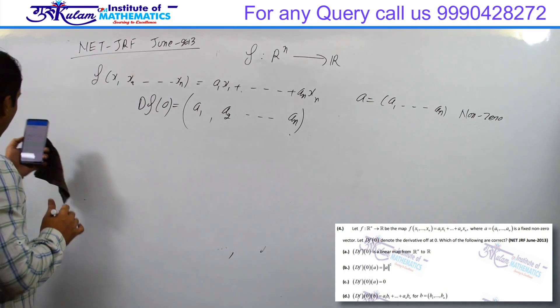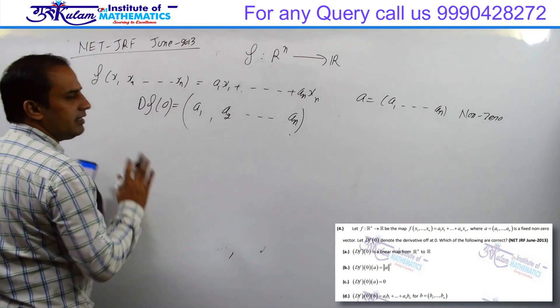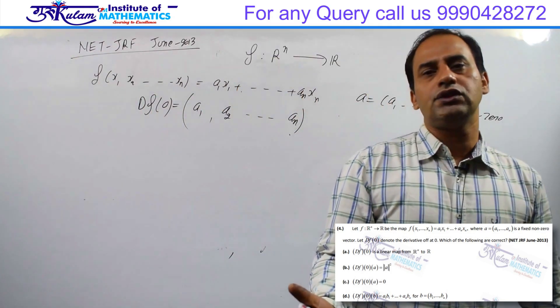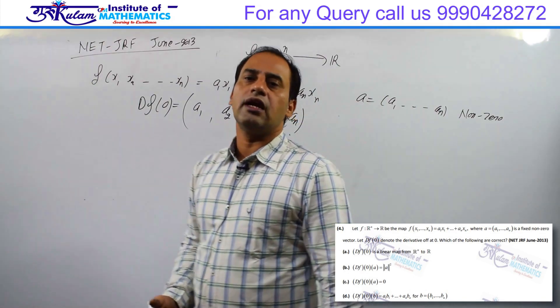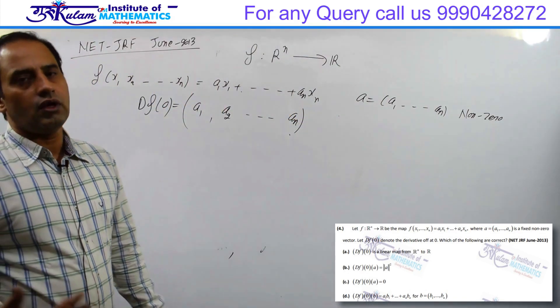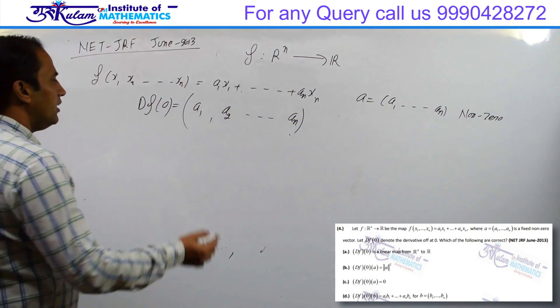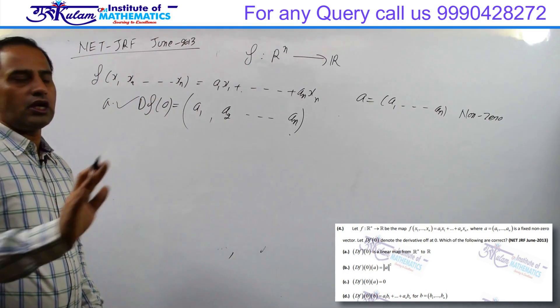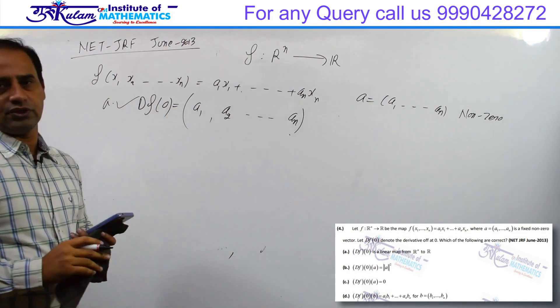Now for the first option: df0 is a linear transformation. For any function, if that function is differentiable, then its derivative always represents a linear transformation. So the first option is true - this is a linear transformation.